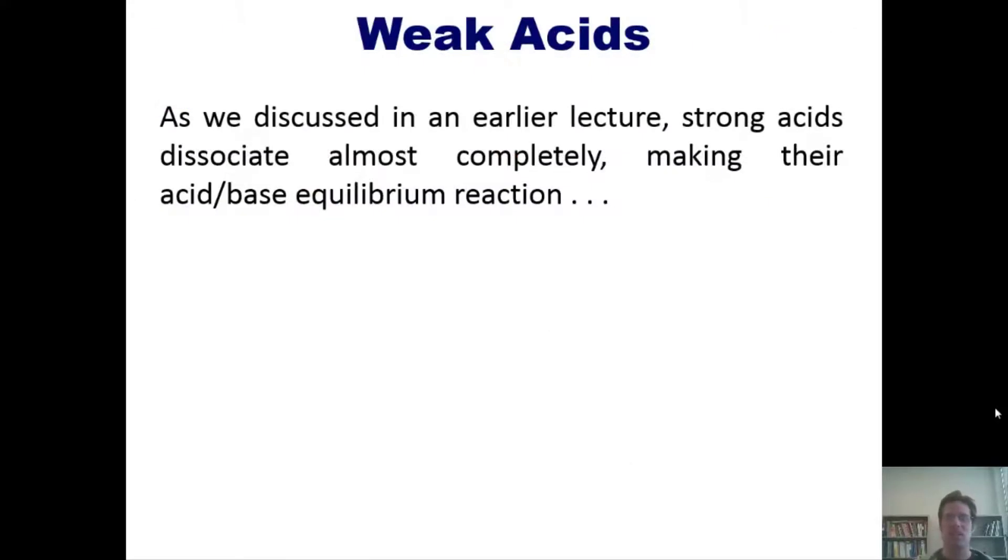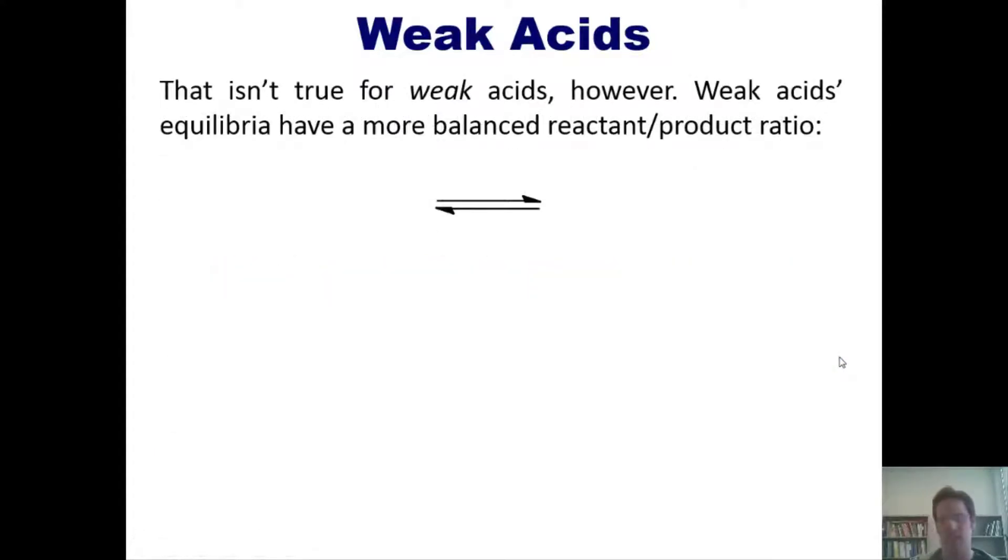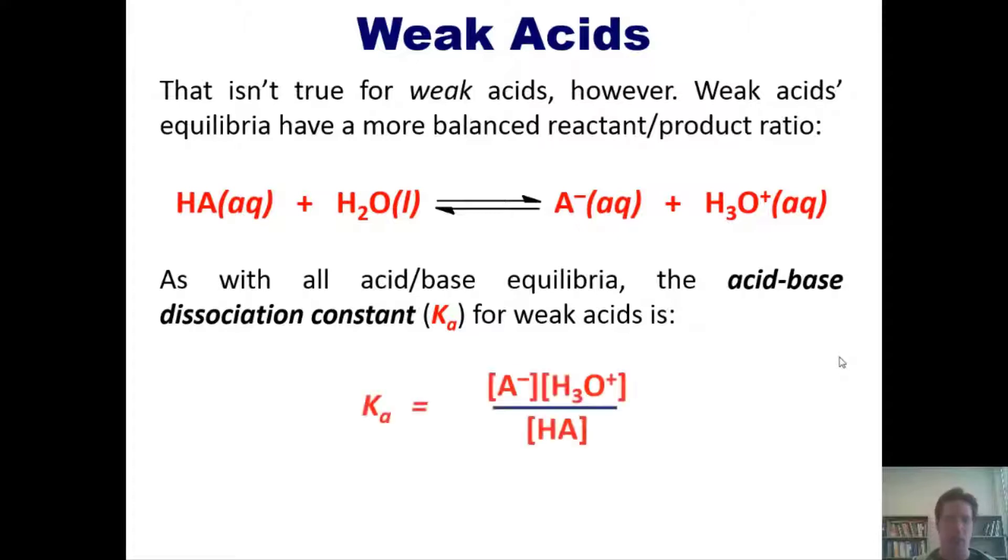Let's get started. As we discussed in an earlier lecture, to which I'll post right here, strong acids dissociate almost completely, making their acid-base equilibrium reaction be, for all intents and purposes, almost like a one-way arrow to the right. Thus, strong acids equilibria heavily favor products. In other words, you don't really have a two-way arrow here. It's all one way. Now, that isn't true for weak acids. Weak acids equilibria have a more balanced reactant to product ratio than strong acids. As with all acid-base equilibria, the acid-base dissociation constant, or Ka, for a weak acid is this. Notice, of course, that we always omit any liquids or solids on either side of the reaction.